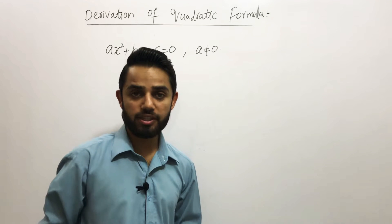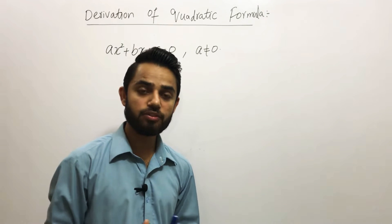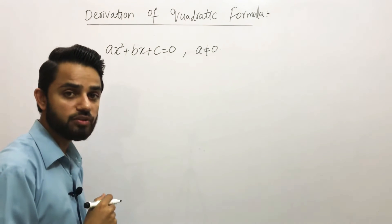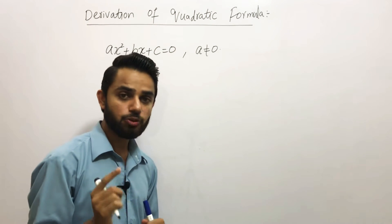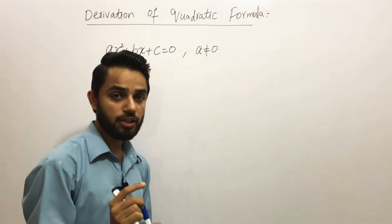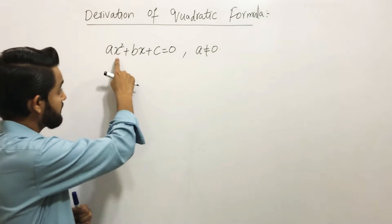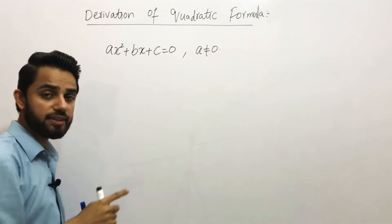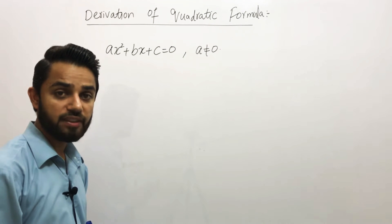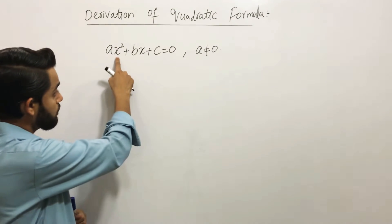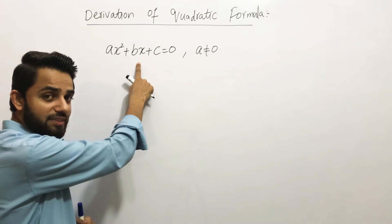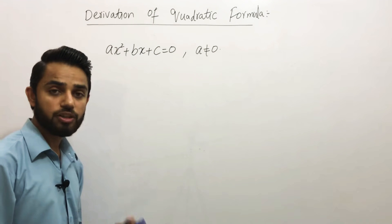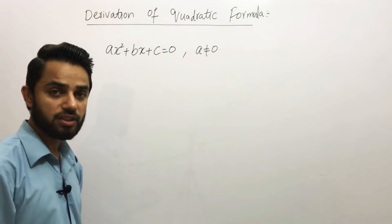What if a were equal to 0? To understand why a should not be 0, you must know that in a quadratic equation the degree of this polynomial is 2, because x is the only variable involved and its highest power is 2. That is why the degree of this polynomial equation is 2.